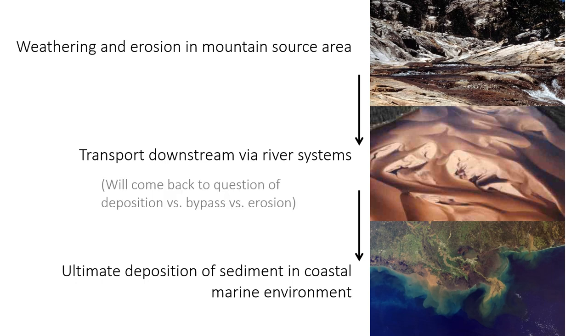However, some sediment does get left behind in rivers, and at times some of that sediment can be deposited permanently. It can also move through — which is called bypass — or the river could even be eroding sediment itself and not depositing.